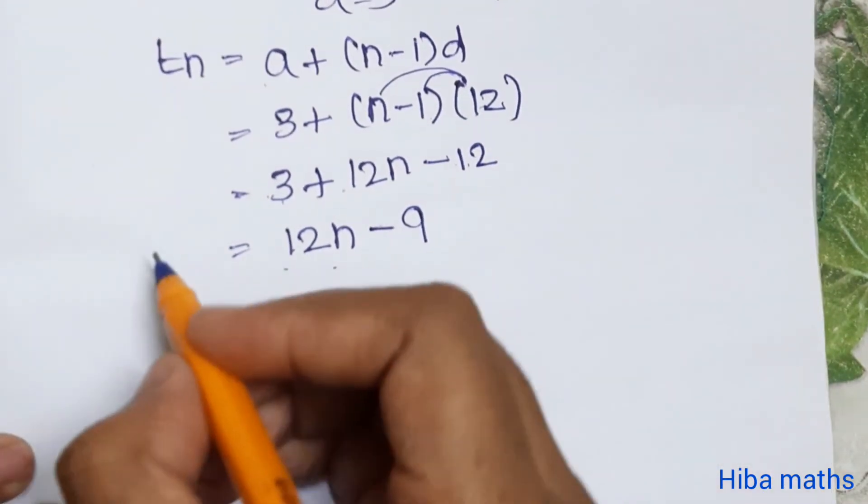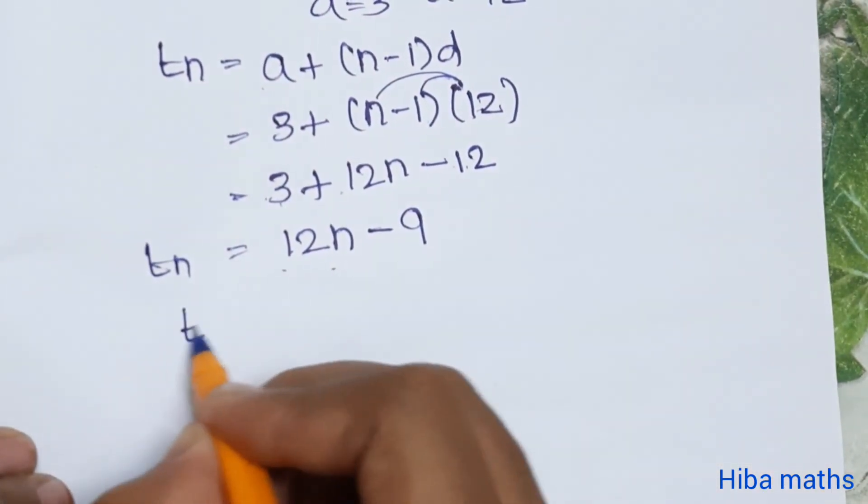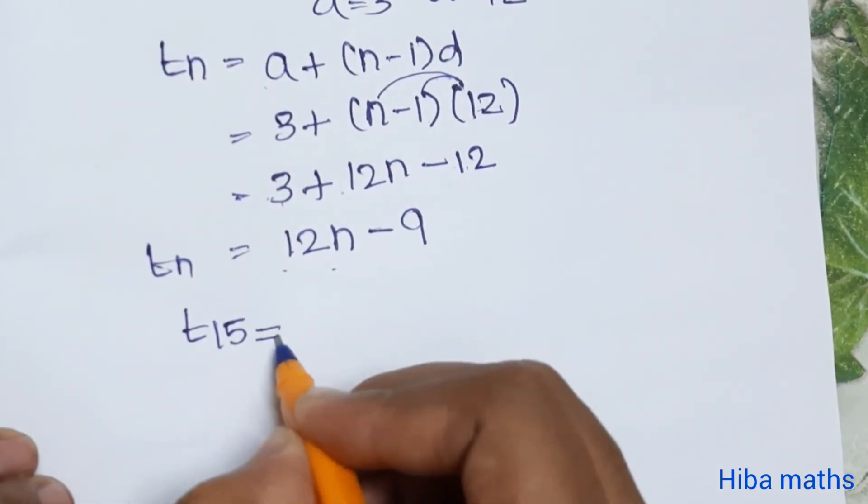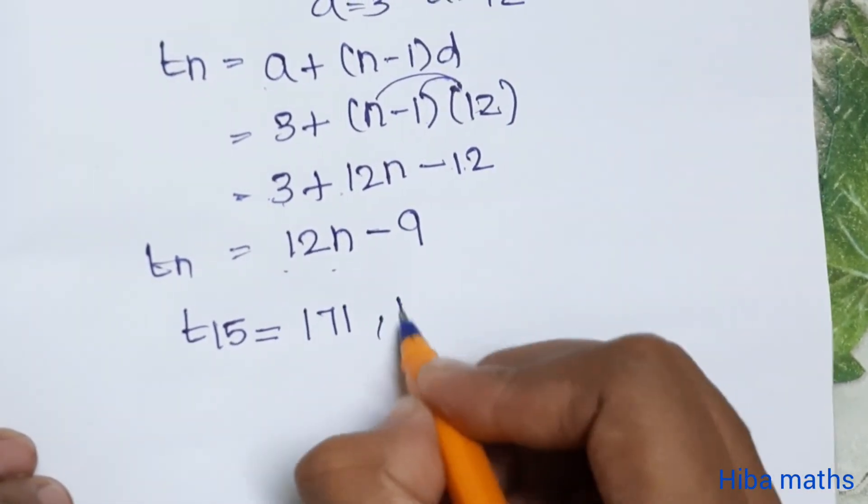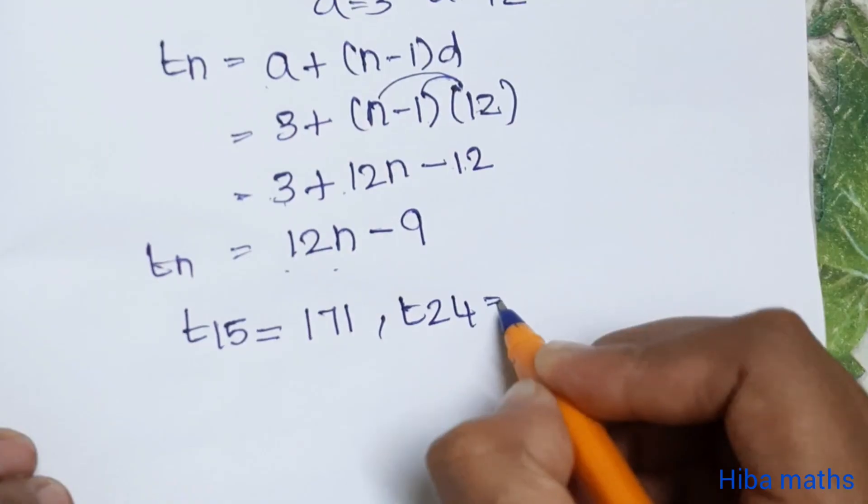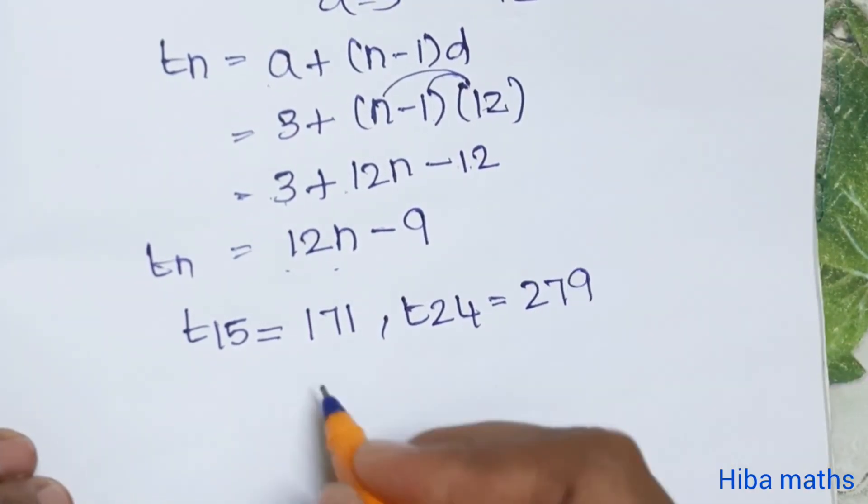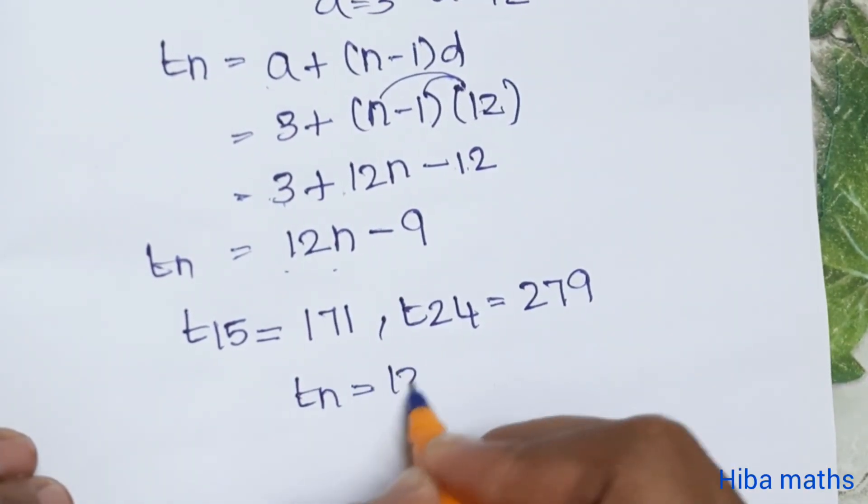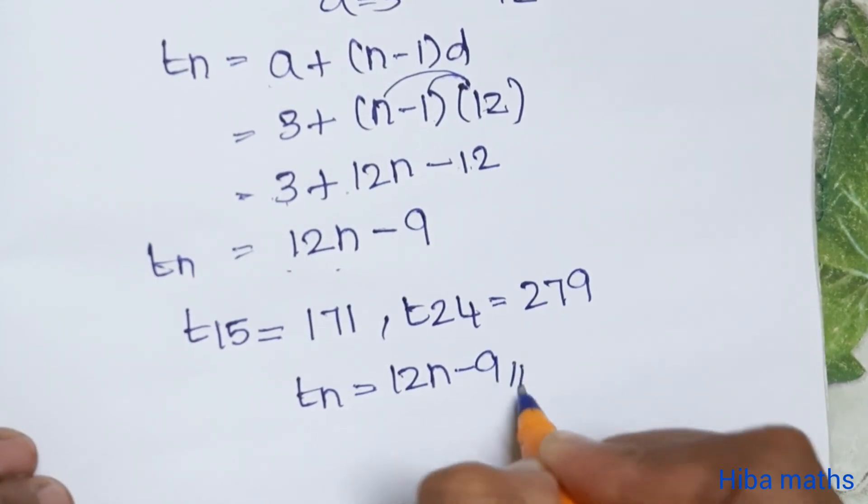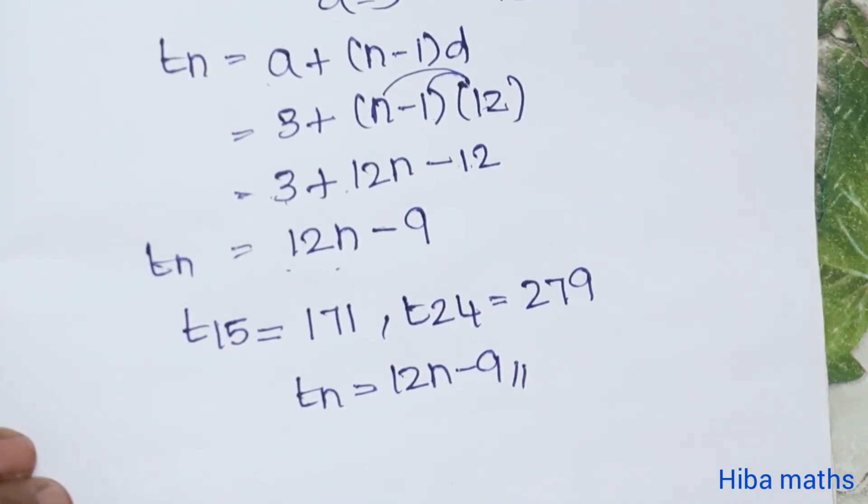So in conclusion, t of 15 is 171, t of 24 is 279, and t of n is 12n minus 9. You all understand, thank you so much for watching.